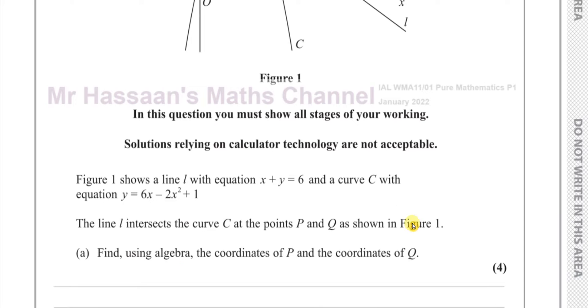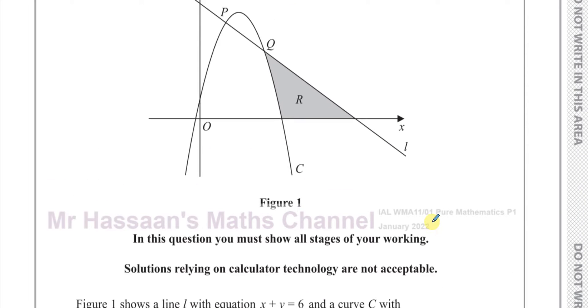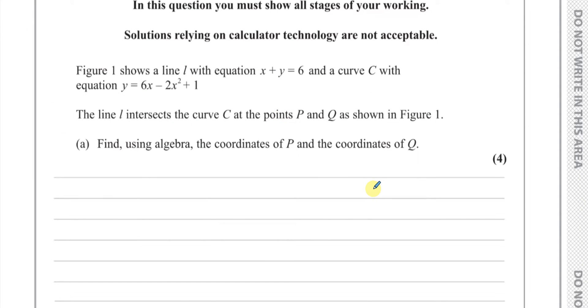Find using algebra the coordinates of P and Q. So we're going to find where these two intersect. We have to solve simultaneously the equations x + y = 6 and y = 6x - 2x² + 1. To solve these simultaneously, we use substitution. I can take the first equation and make y the subject, so y = 6 - x.